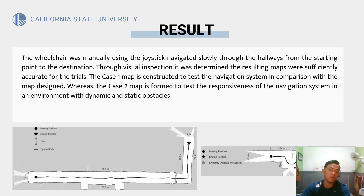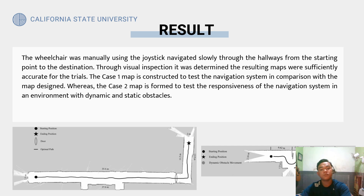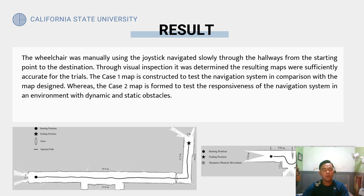For the results, the wheelchair was manually driven using the joystick technique, slowly through the hallways from the starting point to the destination. Through visual inspection, the resulting maps were determined to be sufficiently accurate for the trials. Case 1 map was constructed to test the navigation system in cooperation with the map design, whereas the Case 2 map was formed to test the responsiveness of the navigation system in an environment with both dynamic and static obstacles.